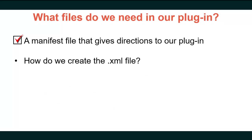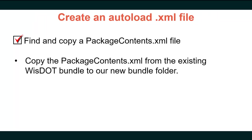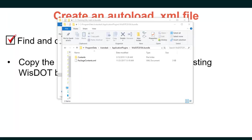Next, we need to create the XML manifest file that gives directions to our plugin. To create it, we find and copy an existing packagecontents.xml file. We will copy the packagecontents.xml from the existing WisDOT bundle at C:\ProgramData\Autodesk\ApplicationPlugins\WISDOT2018A.bundle, then paste it into our new bundle folder.